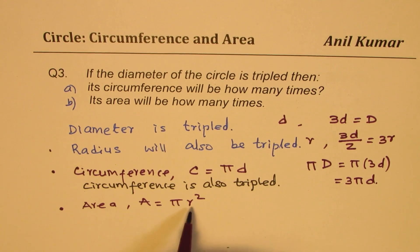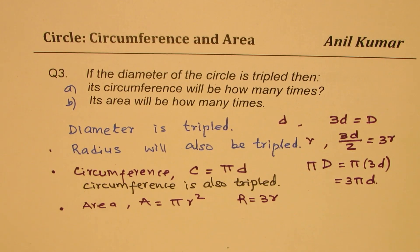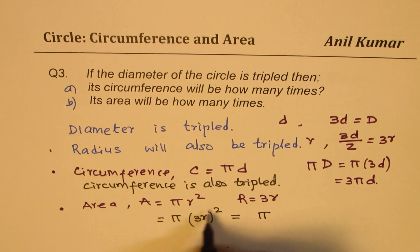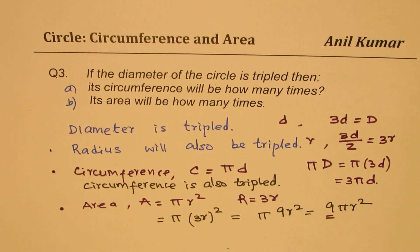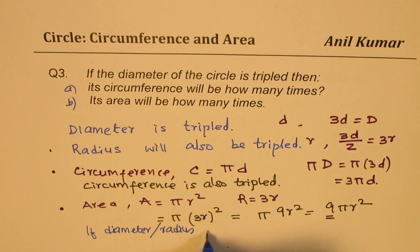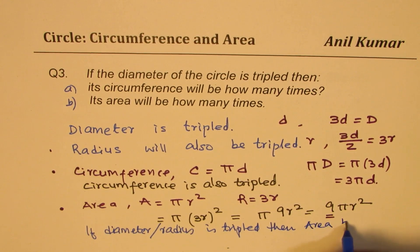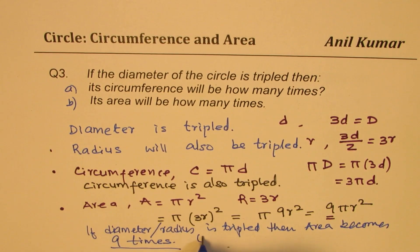Now, in this case, the bigger radius is 3 times r. If I write (3r) squared, I get π times 9, so I get 9r squared, which is 9πr squared. Therefore, if diameter — or for that matter, even radius — is tripled, then area becomes 9 times, not 3 times. That is 3 squared times.